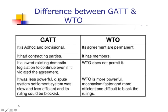Key differences between GATT and WTO: GATT was ad hoc and provisional, but the WTO agreement is permanent. GATT had contracting parties, while WTO has permanent members. GATT allowed existing domestic legislation to continue even if it violated the agreement, but WTO does not permit any violation of agreements among its members. GATT's dispute settlement system was less powerful and very slow, while WTO's mechanism is more powerful, faster, more efficient, and difficult to block rulings.